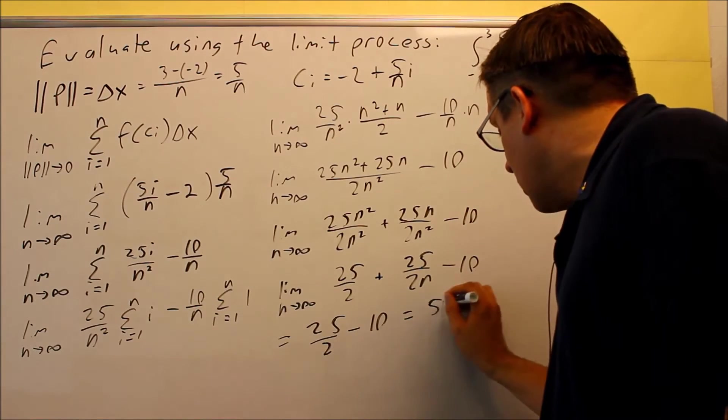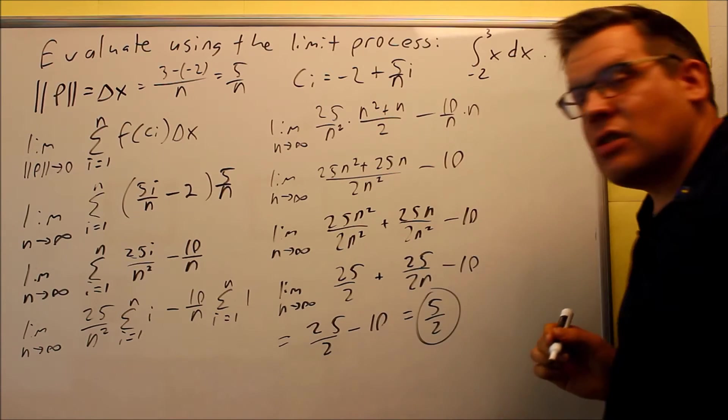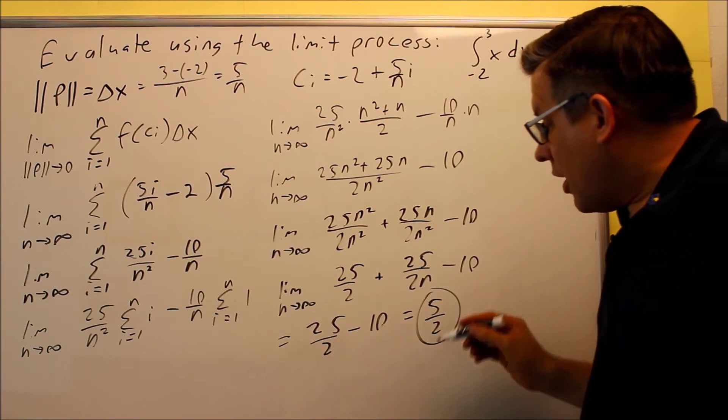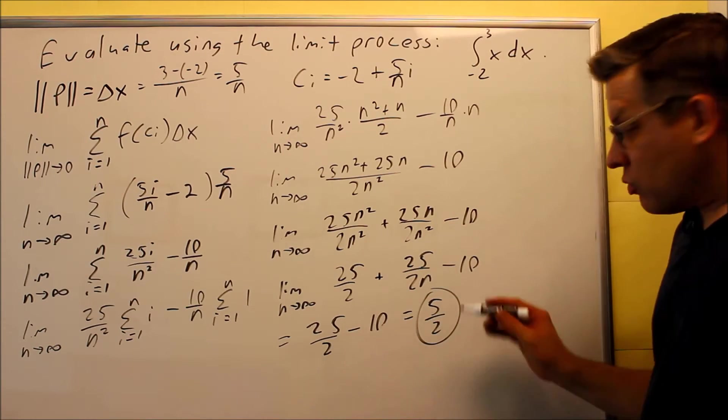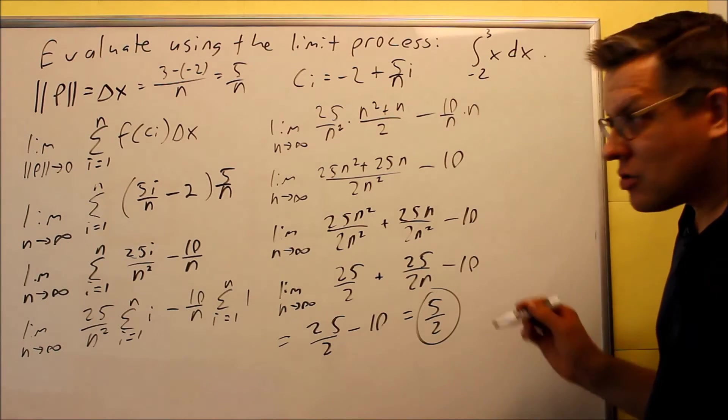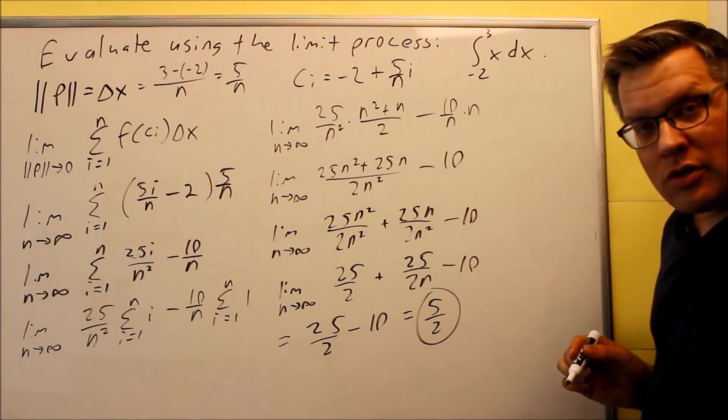And if I work this out, I'll get 5 halves as my answer there. 25 halves minus 20 halves will give you 5 halves there. So, that means that this would be the answer.